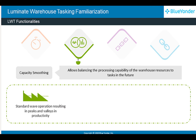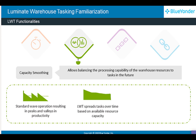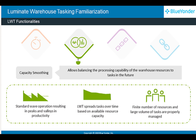In another instance, a standard wave operation in a warehouse results in peaks and valleys in productivity. When tasks pertaining to a wave are sent to LWT ahead of time, it spreads the tasks over time based on available resource capacity. This way, LWT manages a finite number of resources and a large volume of tasks efficiently.